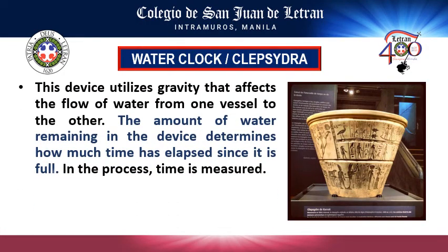Lastly, Egyptians invented the water clock, also known as the clepsydra. This device utilizes gravity to affect water flow from one vessel to another, and was used to measure time by determining how much water remained.